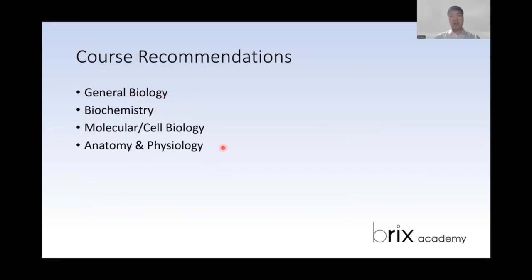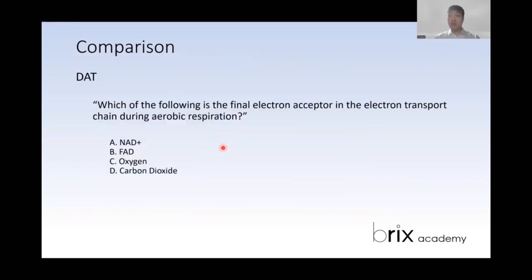Now let's take a look at some of the questions comparing DAT and MCAT. First, here's a DAT question. Which of the following is the final electron acceptor in the electron transport chain during aerobic respiration? This is just the general what-is-that question. And the answer here is going to be oxygen.